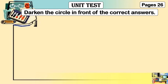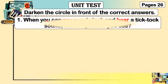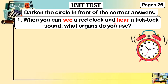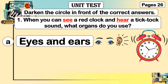On page 26, darken the circle in front of the correct answer using your pencil. Number one: when you can see a red clock and hear a tick-tock sound, what organs do you use to see and hear? Letter A: eyes and ears.